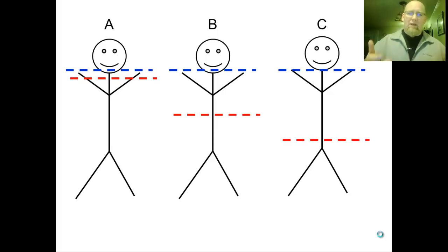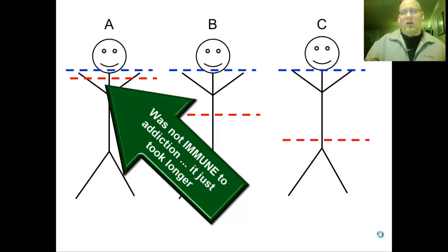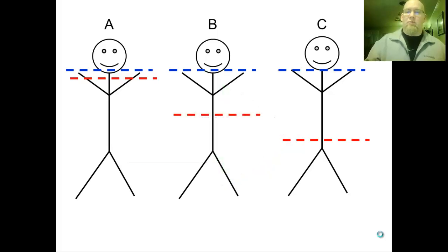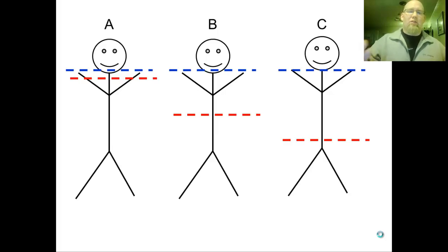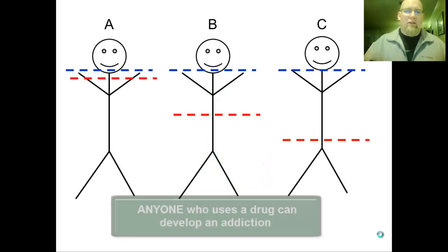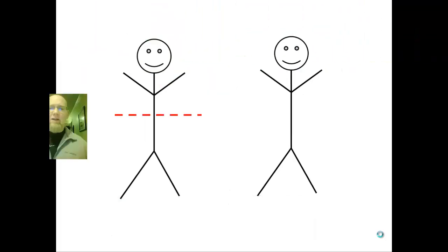Even though Person A had the least amount of risk of developing an addiction, they developed it over the course of time. Person C developed addiction very early, which creates confusion — some people develop addiction quickly and others more slowly over time. That can make Person C think they were born addicted and had no choice, but that's really not true. Even with the lowest trigger level, if Person C never used the drug, they wouldn't have developed the addiction. We're not predisposed to being addicted to a substance — it's based on our patterns of behavior and the choices we make.